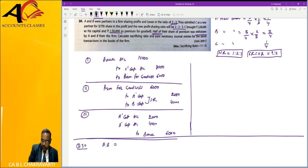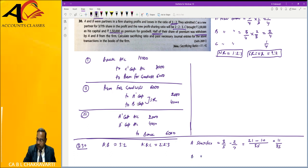Question number 30. A and B, their ratio is 3 to 2. A, B and C, their ratio is 2 to 2 is to 3. So first, let's see what is the sacrifice? First, 3 by 5, now 2 by 7. A's sacrifice is 11 by 35.